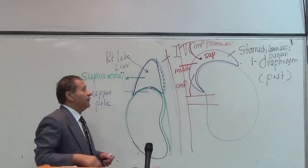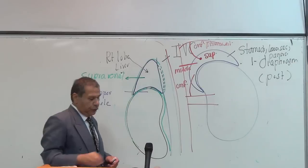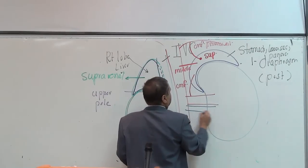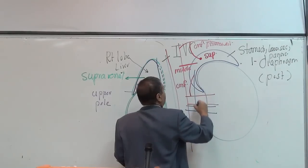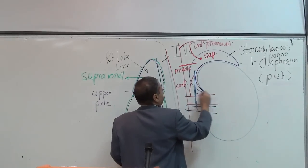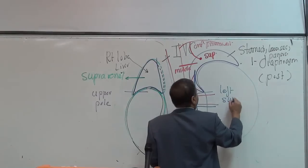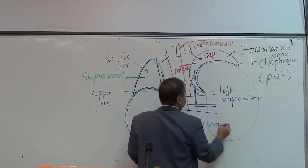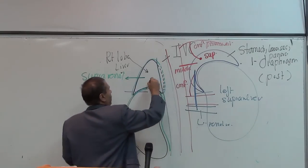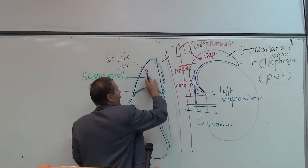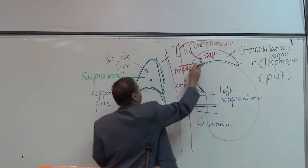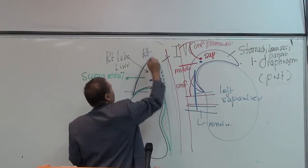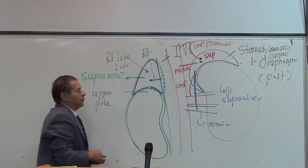But the venous drainage is only one vein — the suprarenal vein. The left suprarenal vein drains into the left renal vein. The right suprarenal vein drains into the inferior vena cava.